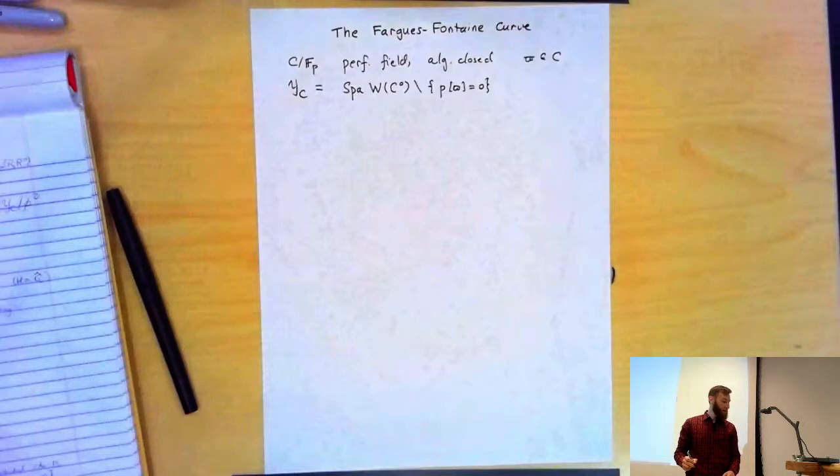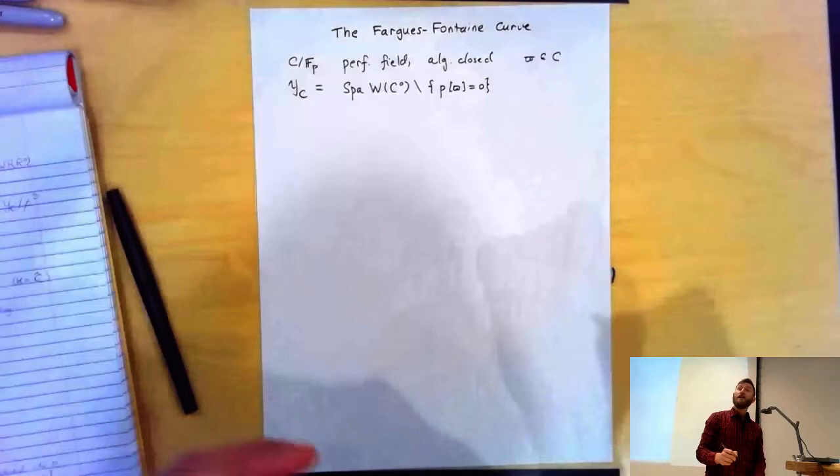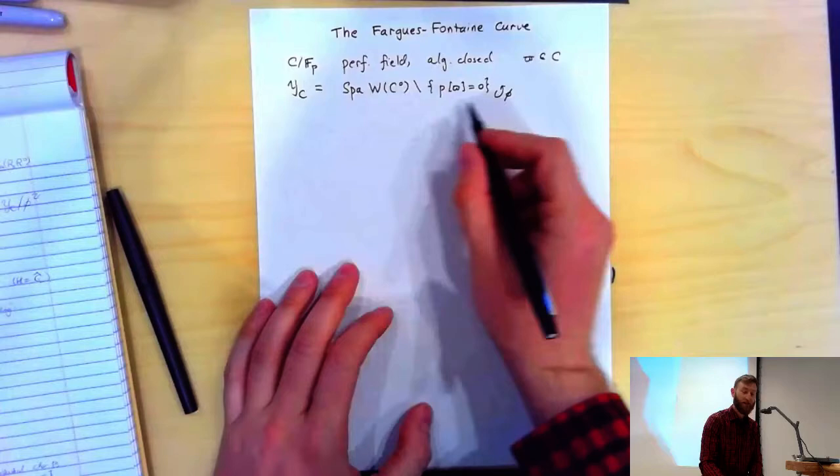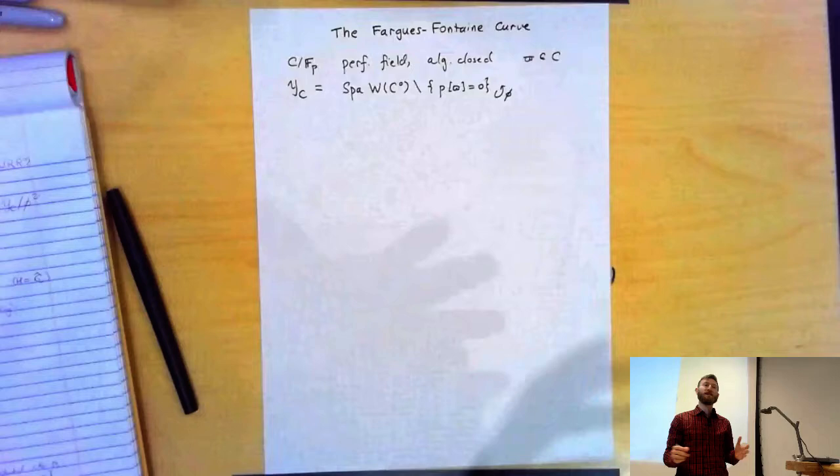I can form Spa of this, but I want to throw away the points that think that P and π are zero. The π here is a pseudo-uniformizer inside of C. So this is a Noetherian adic space over Q_p, because I inverted P. And it has an action of Frobenius operator φ, because C being a perfect field, it has a Frobenius map, and all of these constructions are functorial, so φ acts on this.